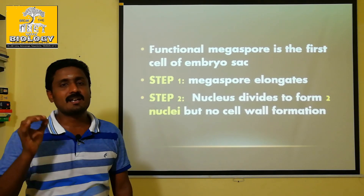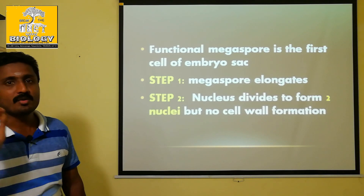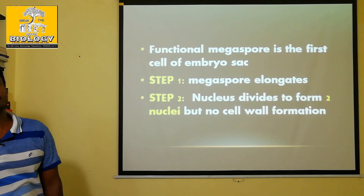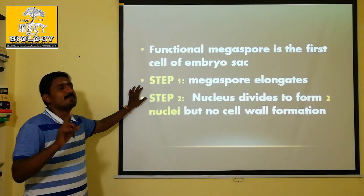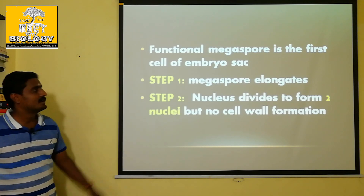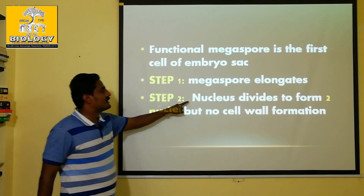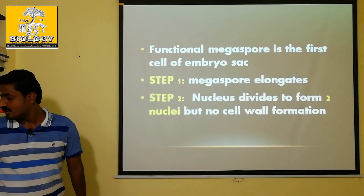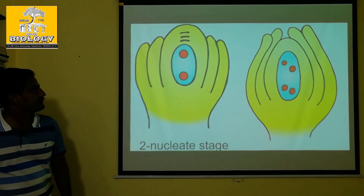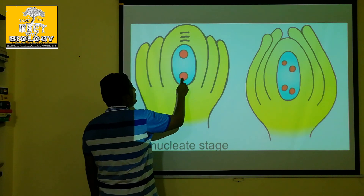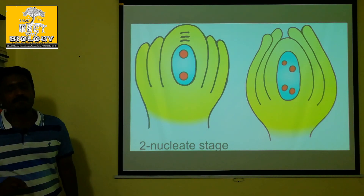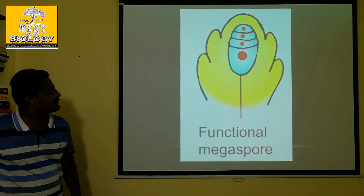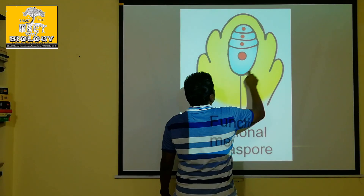One cell is the functional megaspore. The functional megaspore is first elongated. The nucleus divides to form two nuclei. That stage is here — the functional megaspore is one cell with one nucleus.